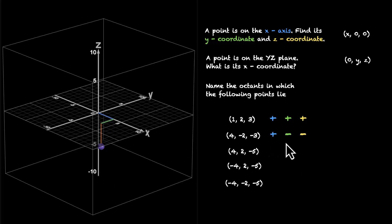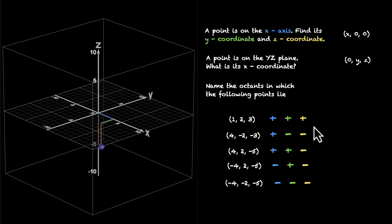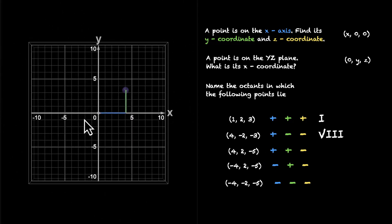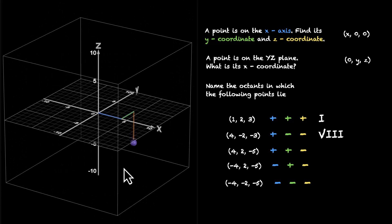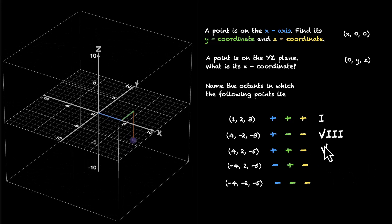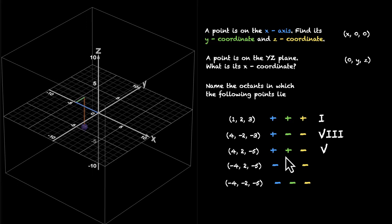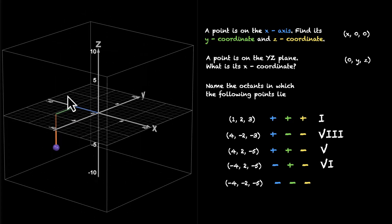Let's mark the signs for the remaining three. We have (positive, positive, negative), (negative, positive, negative), and (negative, negative, negative). For (4, 2, -5): X and Y are positive, but Z is -5, so we are in the basement directly below the first octant — that's the fifth octant. For (-4, 2, -5): negative X, positive Y, and negative Z — that's the sixth octant. And for (-4, -2, -5): negative, negative, negative — that's the seventh octant.